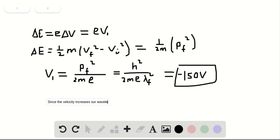the wavelength, which is inversely proportional to momentum, decreases.